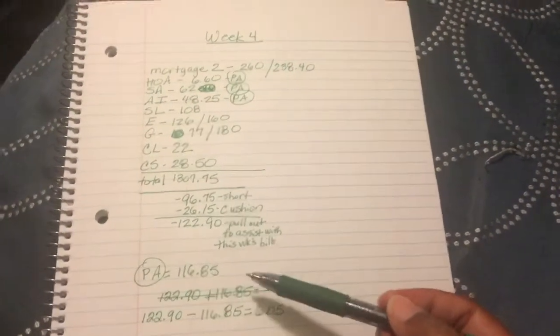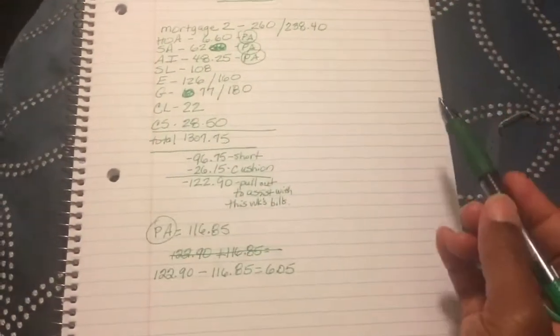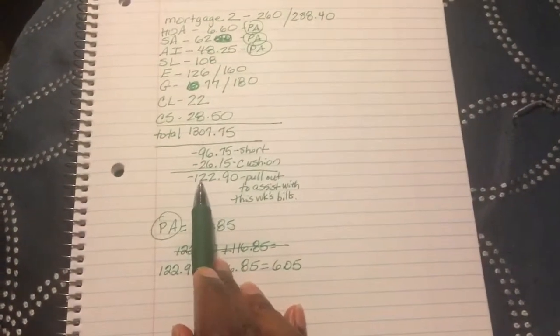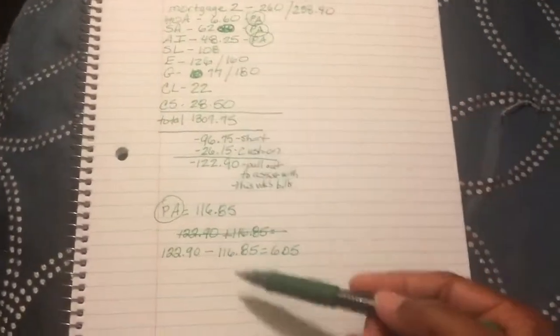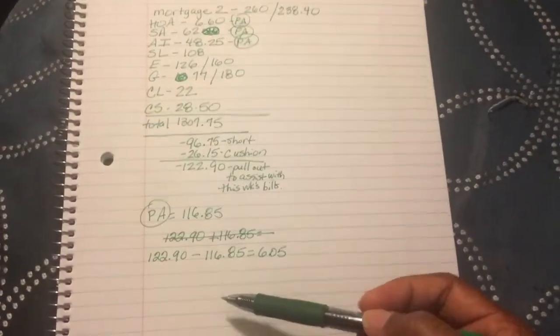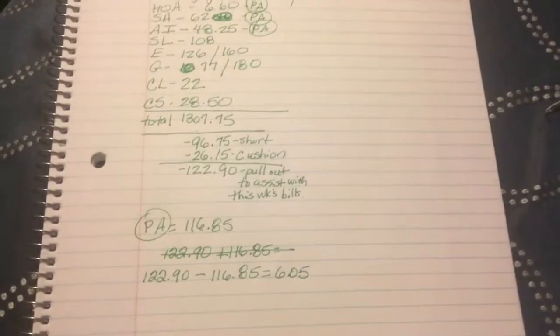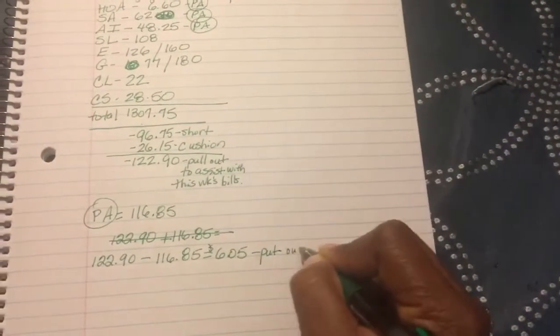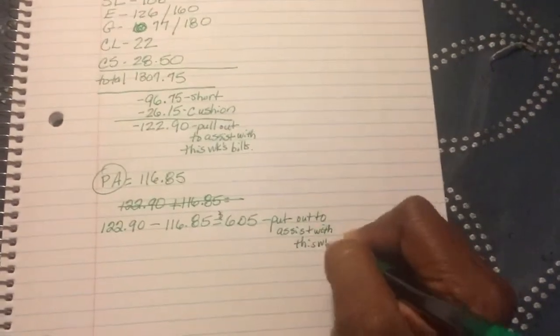So if you just really didn't want to do it that way, you could put all three of these amounts, which is $116.85, you can put that away into your bill account first. Then come back and pull out your $122.90 to put back into your bills checking account so it can satisfy what you need done for the week. But instead of me, since I've been doing this for so long, I just kind of add everything up, add or subtract everything up and just pull out the actual amount that I need to pull out. So basically, by this total of $6.05, I'm going to put that I need to pull out to assist with this week's bills.